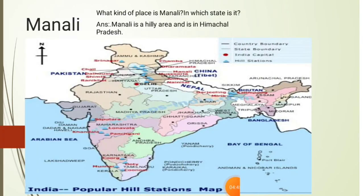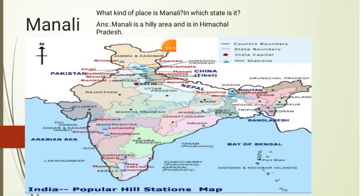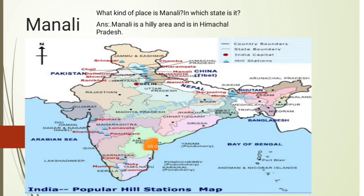After two days he reached Manali. Manali is a hilly area and is in Himachal Pradesh. There are many hill stations in the area: Mussoorie, Nainital, Shimla — these are all hill stations. Khandala is also a hill station, located in Maharashtra.